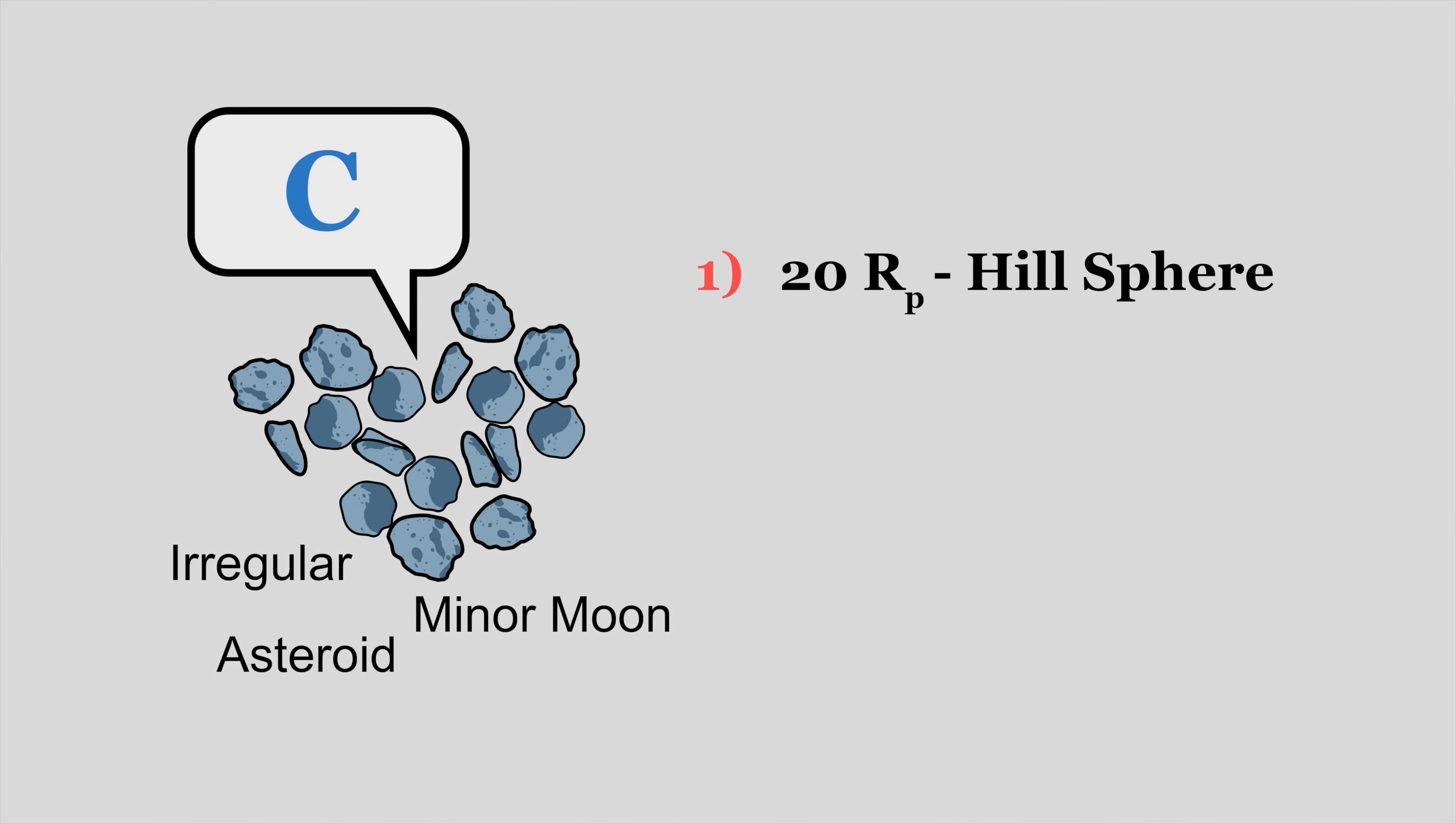So, the final group, the C group, are a collection of distant, irregular, minor moons, slash captured asteroids. That is, they 1. orbit between 20 planetary radii out and the edge of the planet's hillsphere. 2. orbit on highly inclined, highly eccentric, and sometimes even retrograde orbits. And 3. their size will be on the order of tens of kilometers.